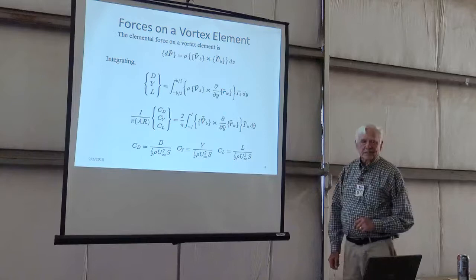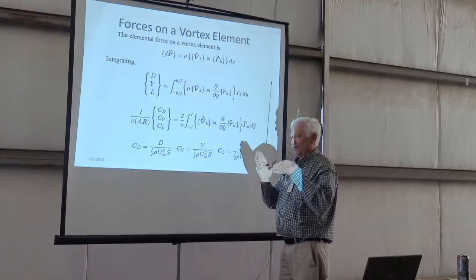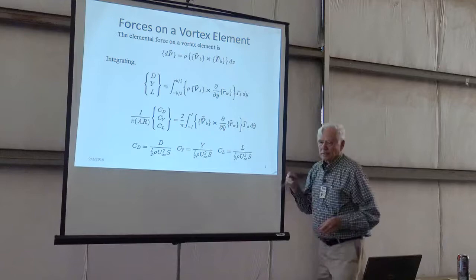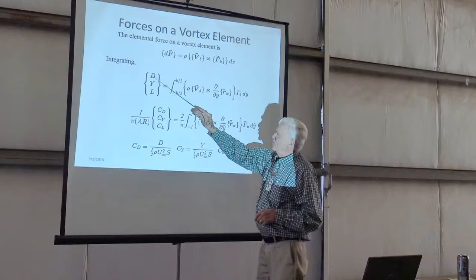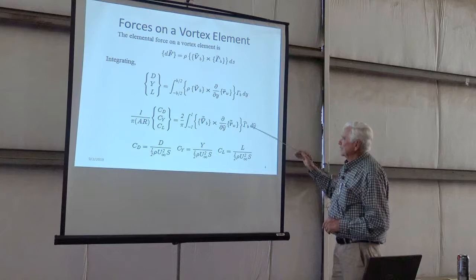What I want to find out is the forces and the moments on this bound vortex. This little force element here, rho v gamma is nice for a straight little vortex thing. When you integrate it over the whole bound vortex, then you get the components for drag, side force, and lift, and make it into a coefficient form.